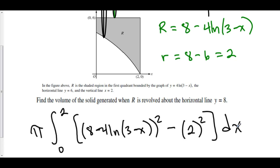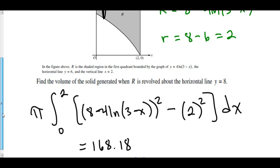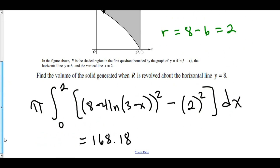This is our formula. We can solve this using either a graphing calculator or Wolfram Alpha, and the volume is 168.18. Using the washer method, we create our larger circle and our smaller circle, and the volume is the integral of pi R squared minus pi r squared. Pulling out pi, we have big R squared minus little r squared, giving a volume of 168.18.